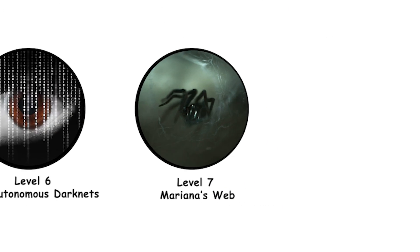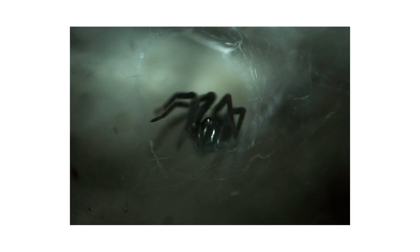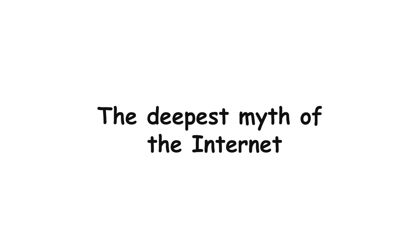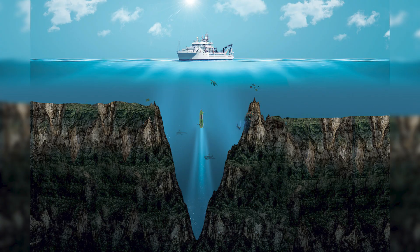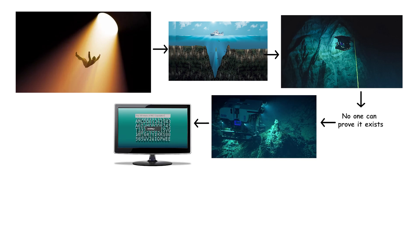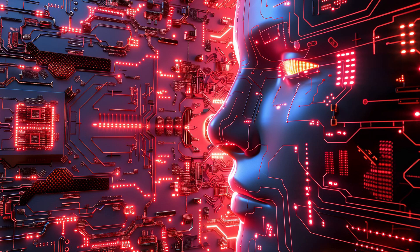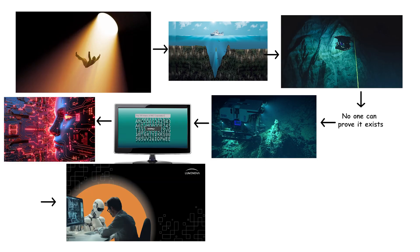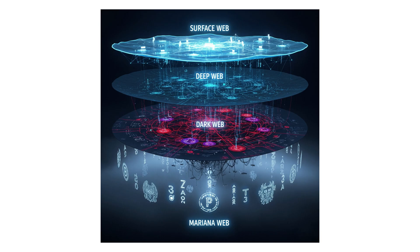Welcome to Level 7: Mariana's Web. This is the place no one has ever seen and everyone fears — the deepest myth of the internet, a digital abyss named after the deepest trench on earth, because even metaphors can't reach the bottom. No one can prove it exists, and yet stories persist — of encrypted archives that outlive their creators, of hidden intelligence networks powered by self-evolving AIs, of systems too complex for human oversight. If the dark web is a shadow, Mariana's Web is the echo beneath it.